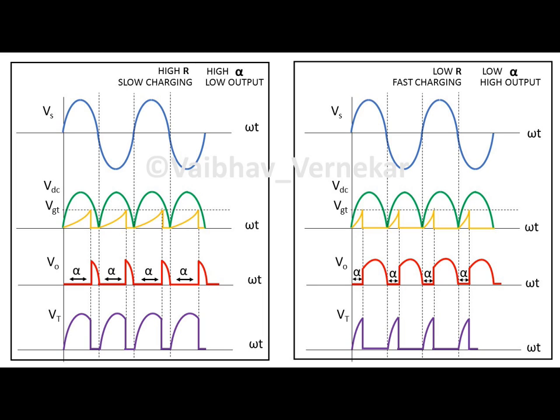In comparison, if a low resistance is put in series with the capacitor, then it charges faster. Hence the firing angle alpha is less and as a result the output obtained is high.